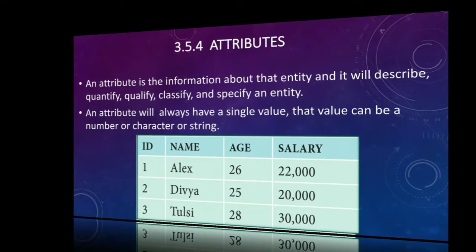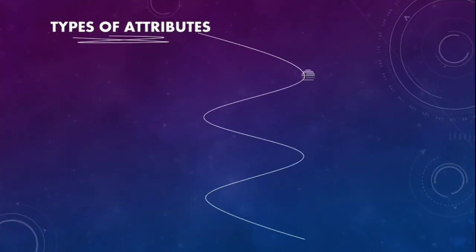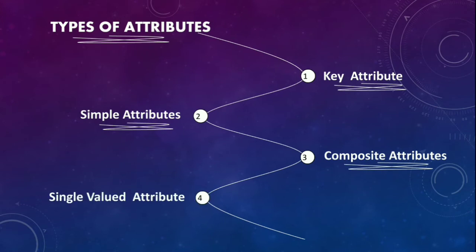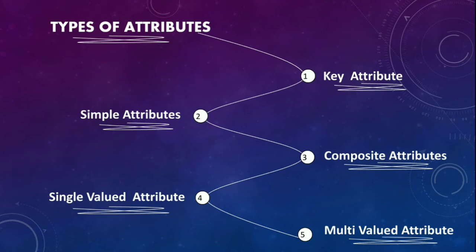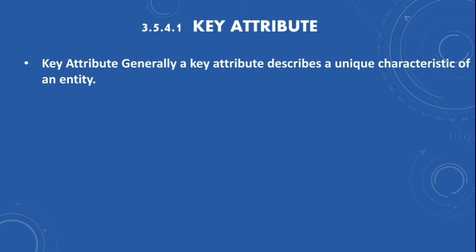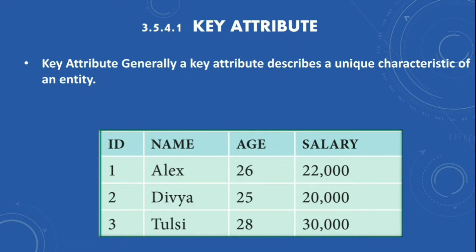There are five types of attributes. The first is key attribute: among all columns, the unique column — like ID or roll number — is called the key attribute because it can be set as a primary key. All other columns are just regular attributes.